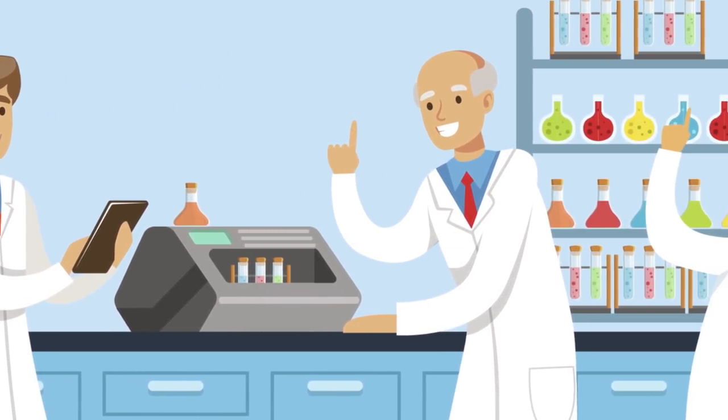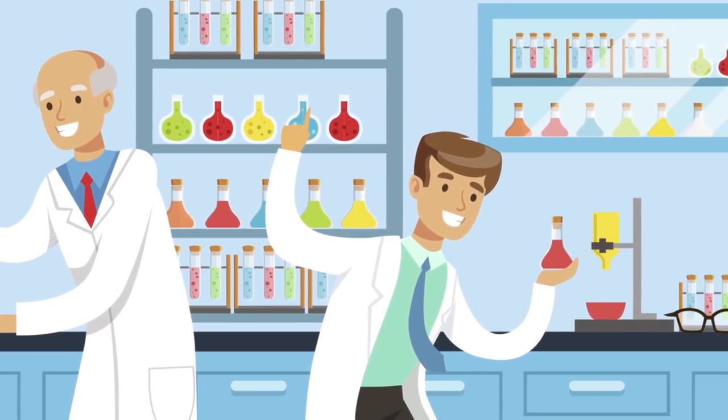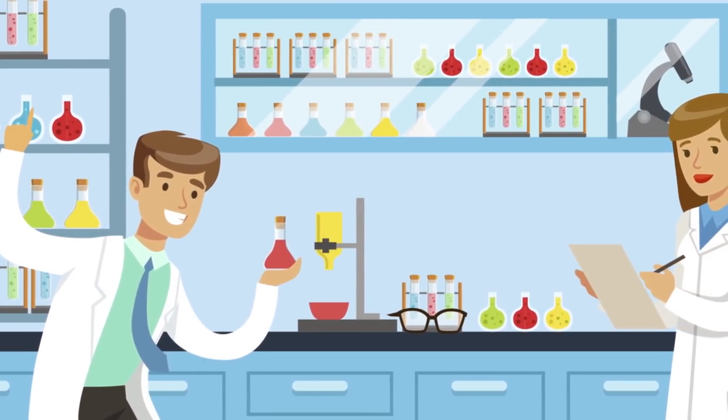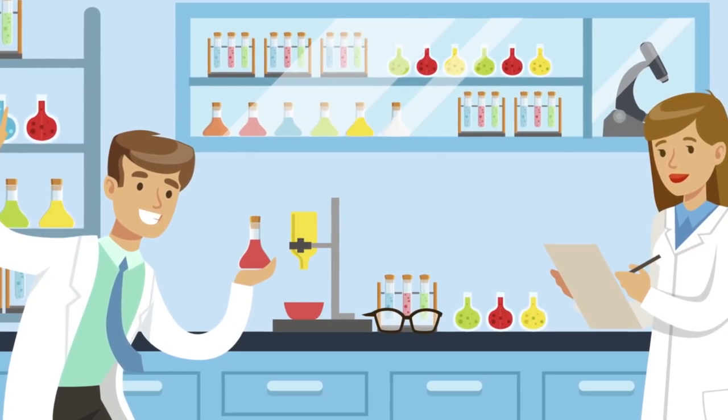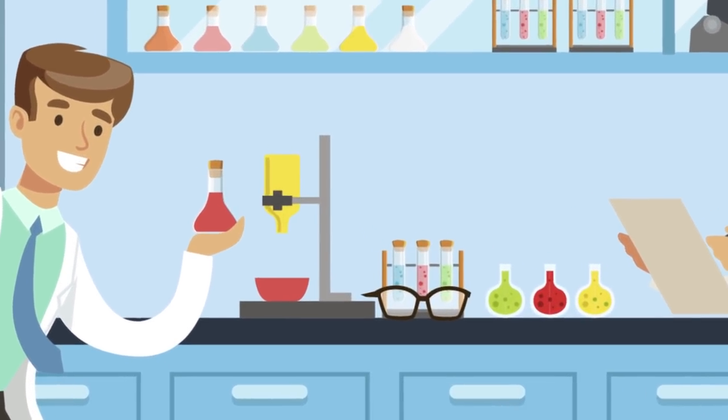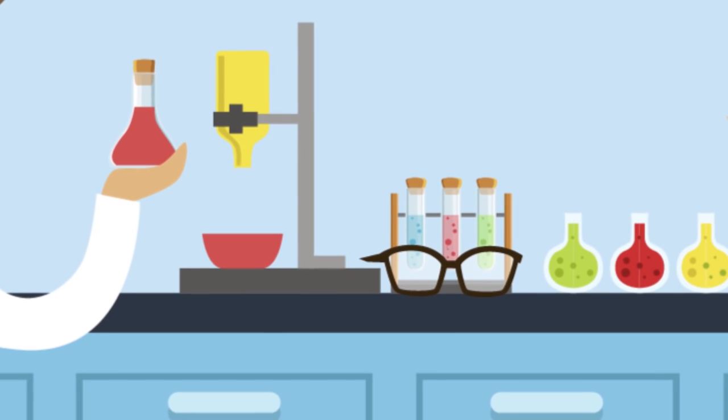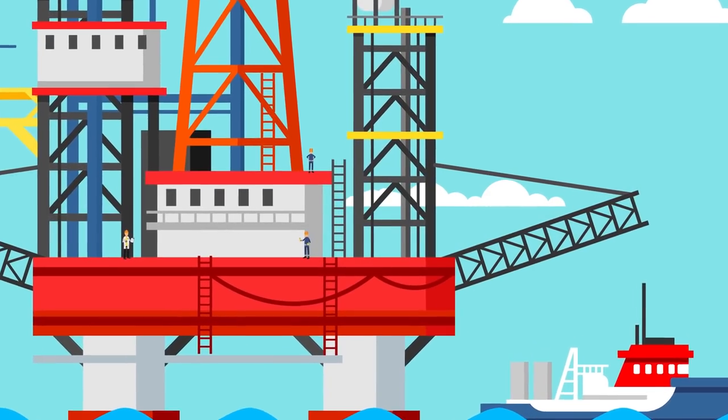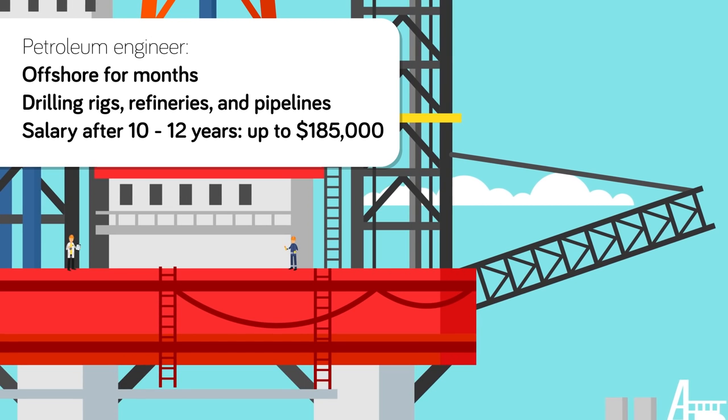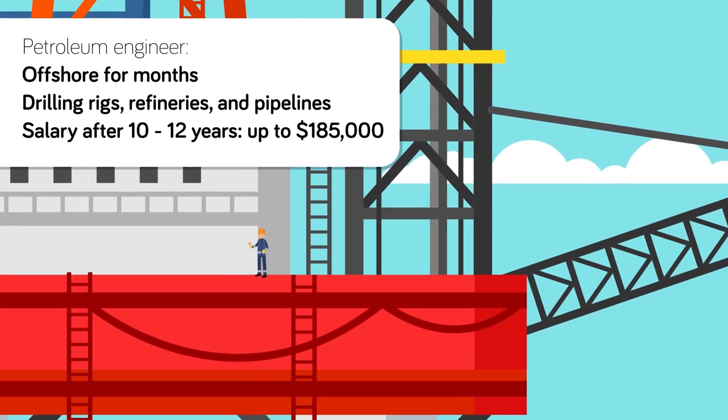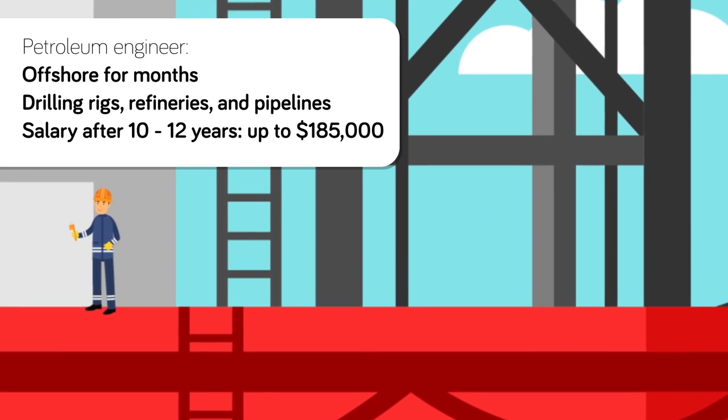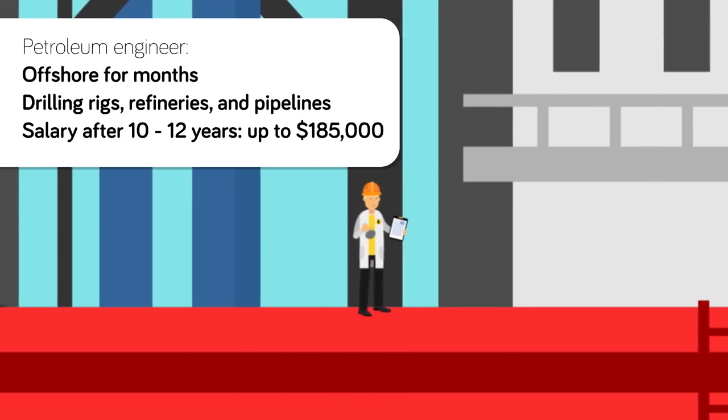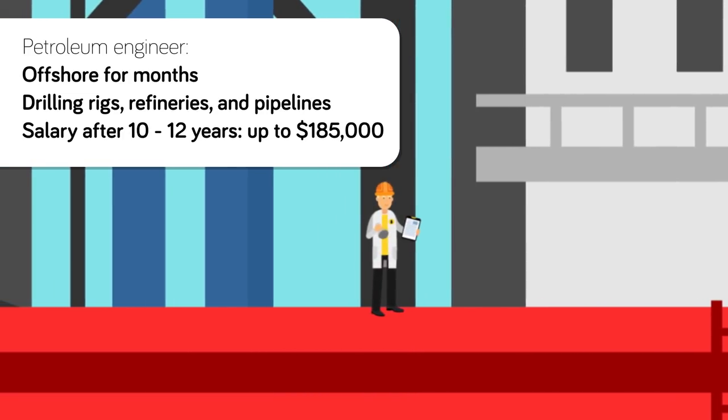Petroleum engineering requires an in-depth understanding of oil, water, and gas, with porous rock at high pressure. Graduates of a four-year degree in petroleum engineering will need a solid understanding of math and science, and be prepared to work in far-flung places. Oil and gas workers can be offshore for months, working on drilling rigs, refineries, and pipelines. After 10 to 12 years, a petroleum engineering expert can expect to almost double that salary, earning up to $185,000 per year, making this the most lucrative career path on our list.